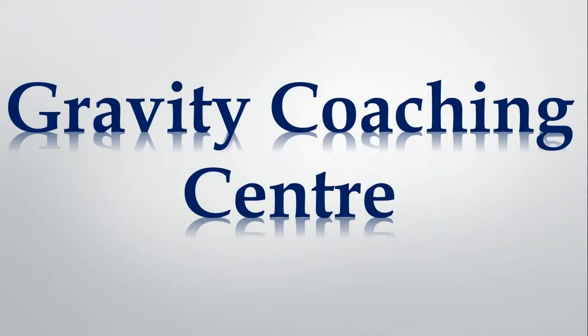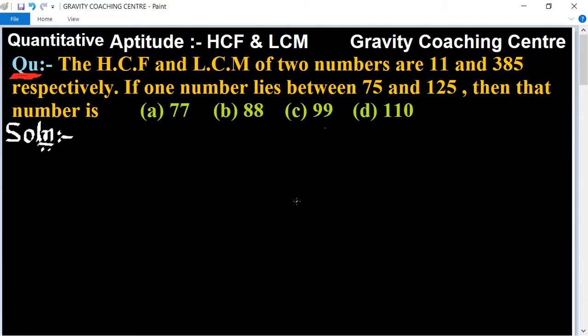Welcome to our channel Gravity Coaching Center. Quantitative Aptitude chapter: HCF and LCM. Question: The HCF and LCM of two numbers are 11 and 385 respectively. If one number lies between 75 and 125, then that number is what?